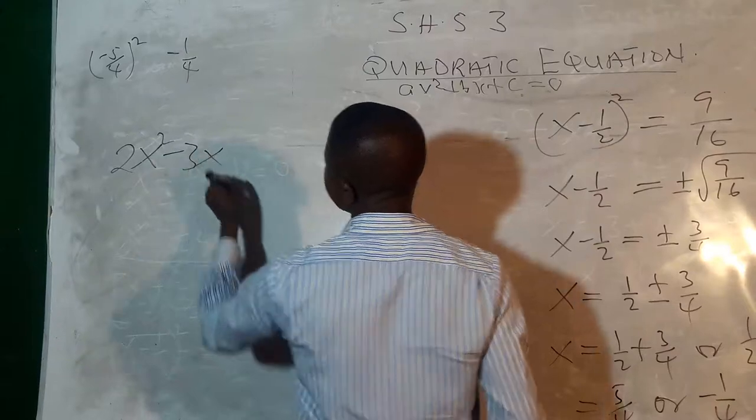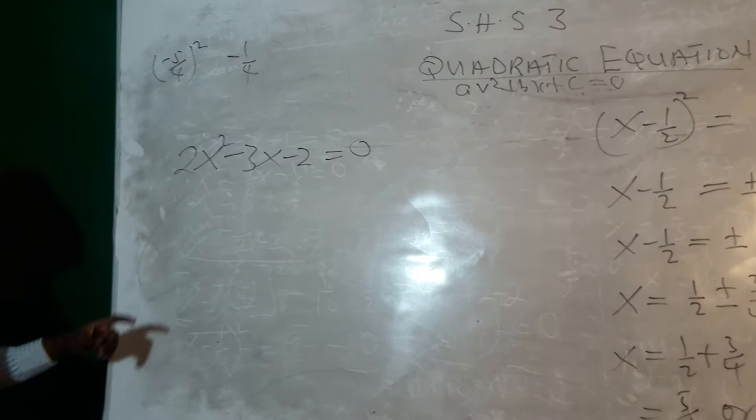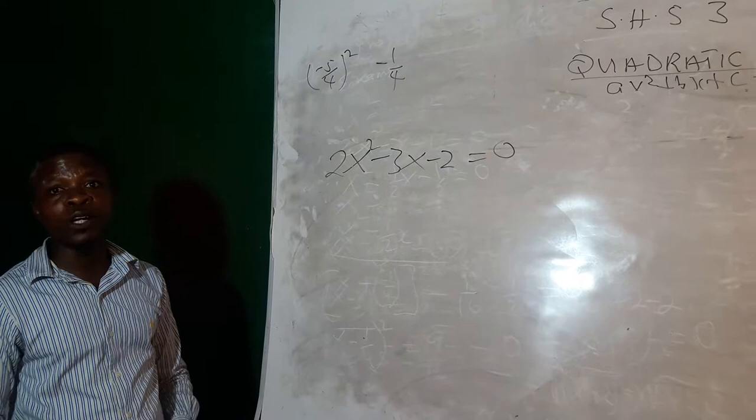We want to solve 2x squared minus 3x minus 2 is equal to 0.